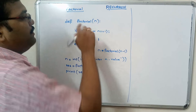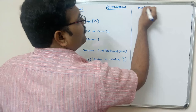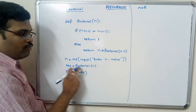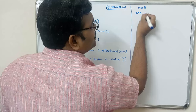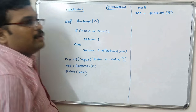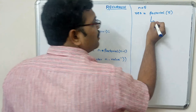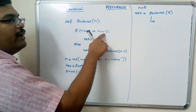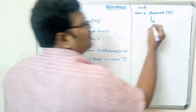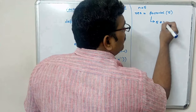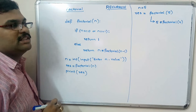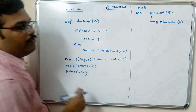Let us trace it. First, n is equal to 5. Result is equal to factorial of n, so result equals factorial(5). Now, is 5 equal to zero? Is 5 equal to one? Both are false, so it returns n * factorial(n-1), that is 5 into factorial of 4.